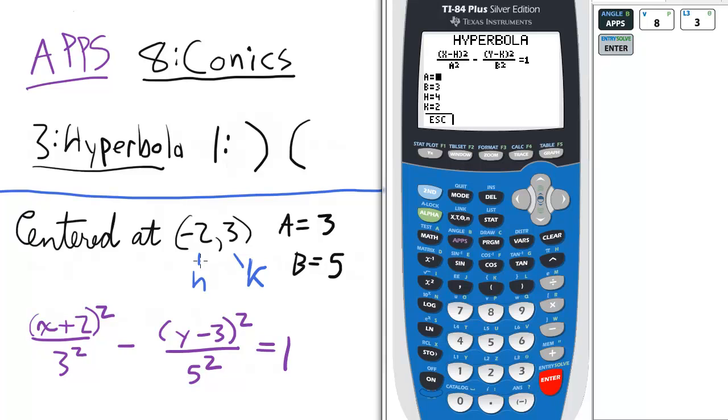And to have this one centered at negative 2, 3, negative 2 will be the h value, 3 will be the k value. 3 is going to be our a, 5 is going to be our b value.